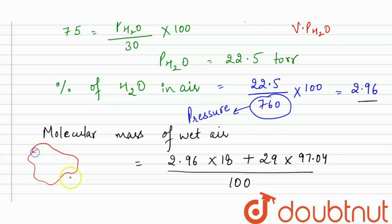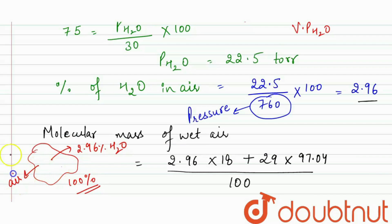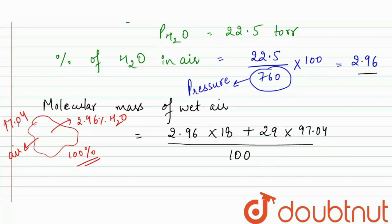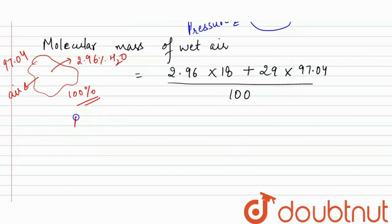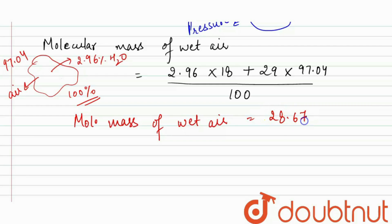We have 100% total. Of that, 2.96% is water, so the remaining 97.04% is air — that's what we substituted. From here, the molecular mass of wet air equals 28.67 g/mol.